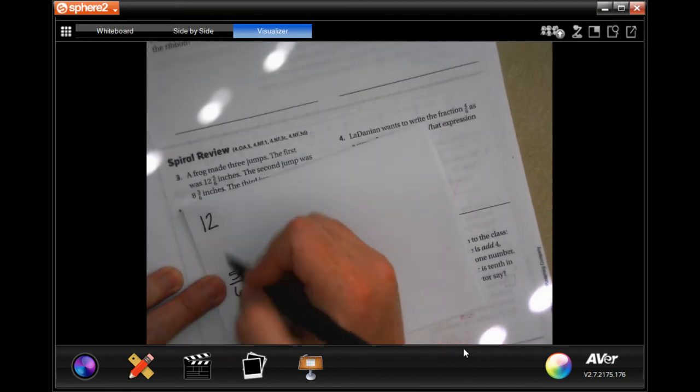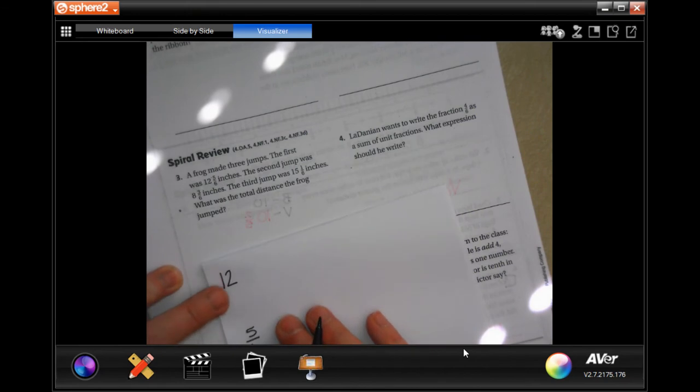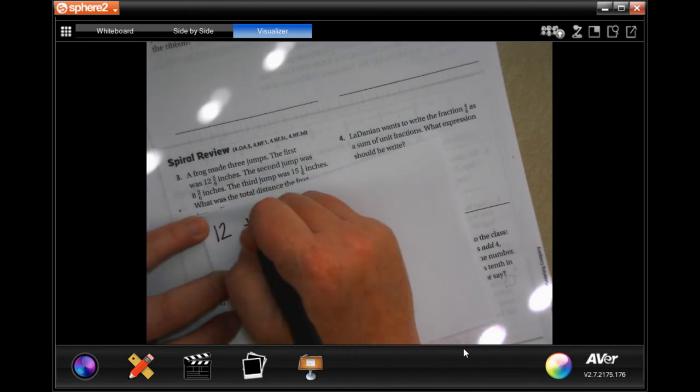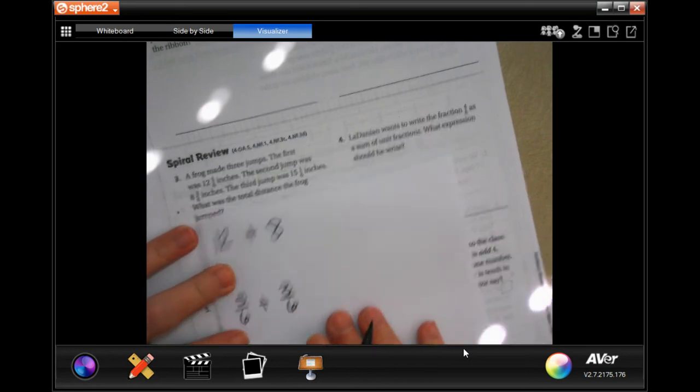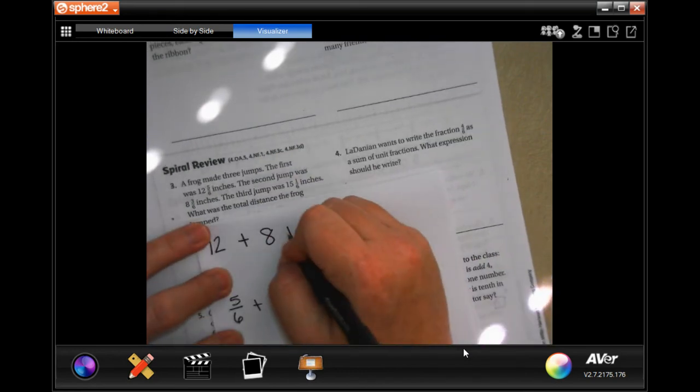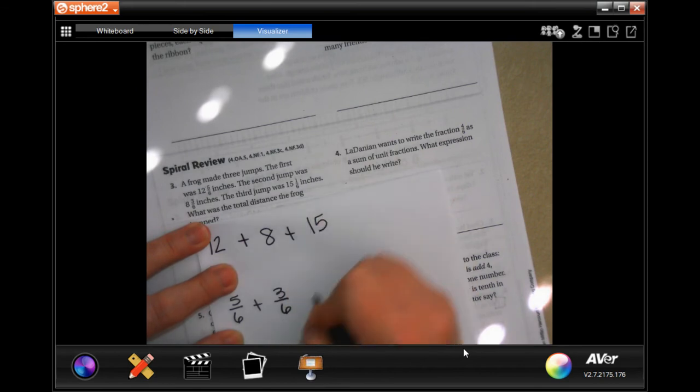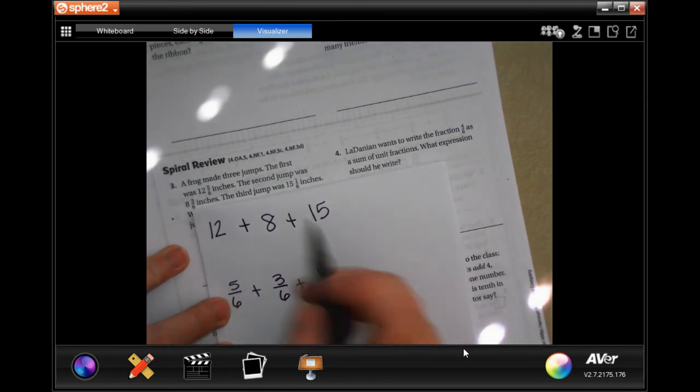So we have 12 and I'm going to put my 5/6 down here. I'm going to sort them out early this time. 12 and 5/6, 8 and 3/6, and 15 and 1/6. All I did was separate out my whole numbers and my fraction.